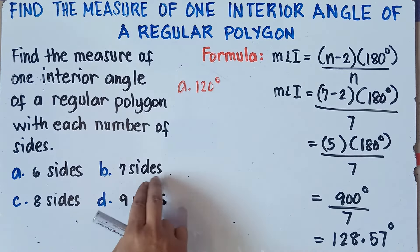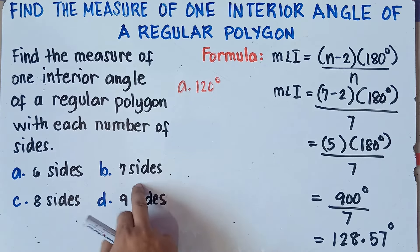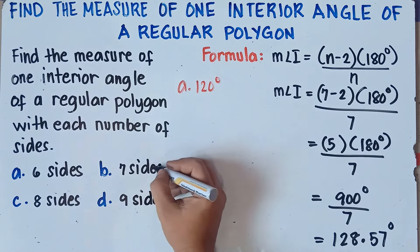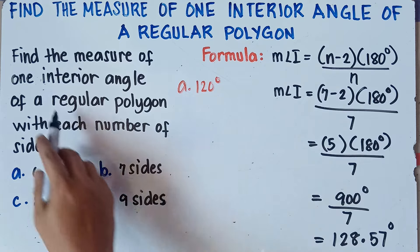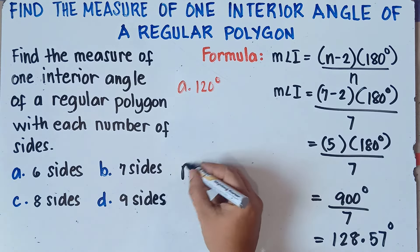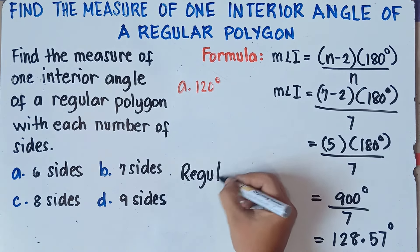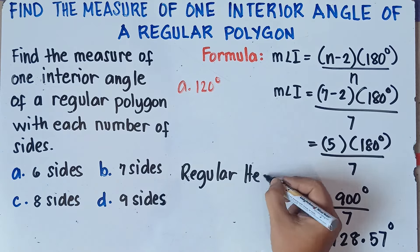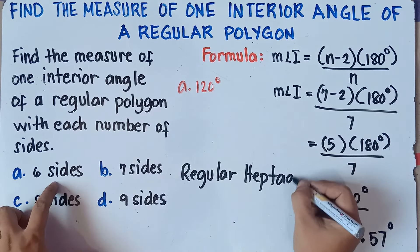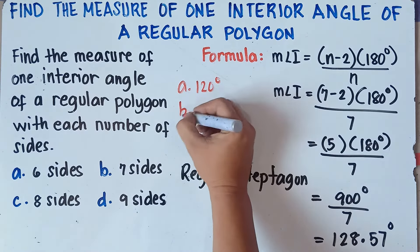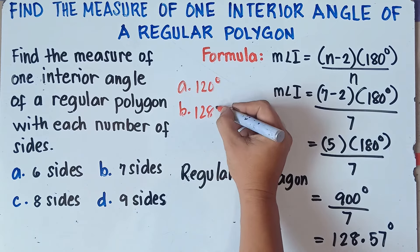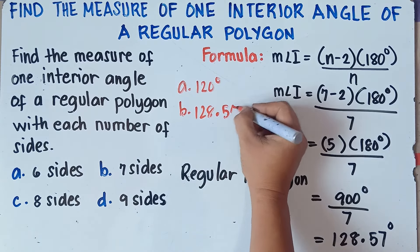A polygon with seven sides — do you remember? That's called a heptagon. Since we have a regular polygon, this is a regular heptagon. Each interior angle of a regular heptagon measures 128.57 degrees.